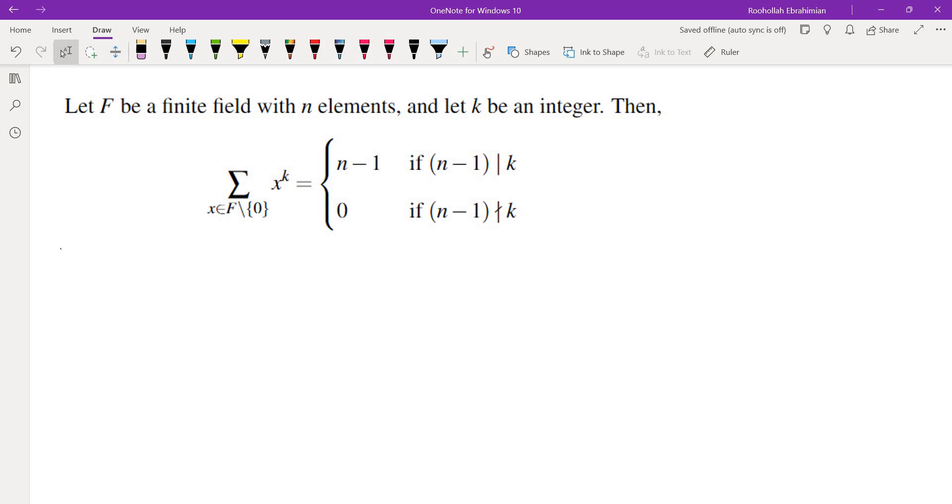So the fact that you want to use here is that if you look at F minus {0}, this is a multiplicative group and in fact it is cyclic. In other words, there is an element of order n-1 in that group, and if you use that, you'll get a geometric sum and basically the same thing would apply.